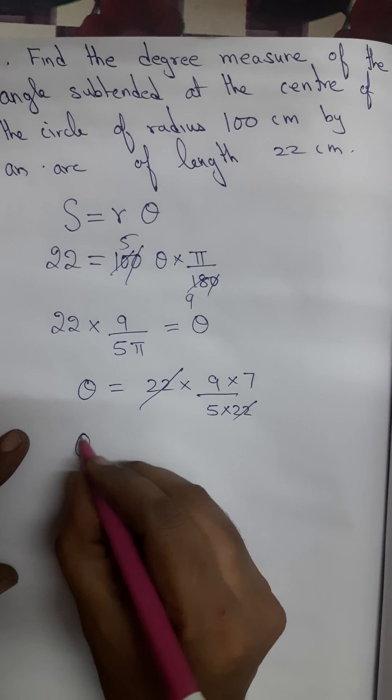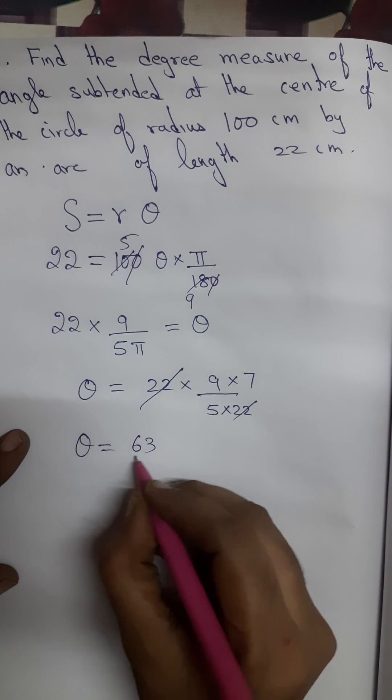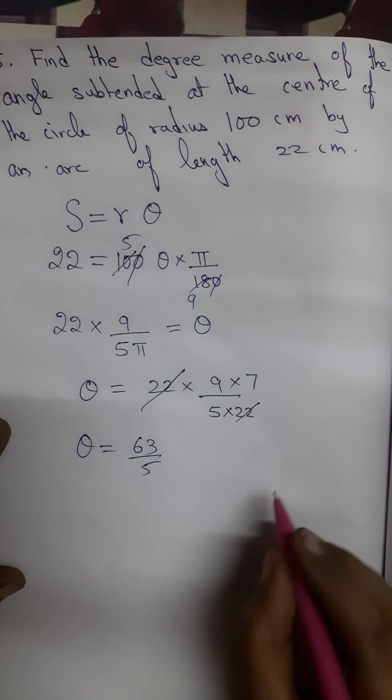22, 22 gets cancelled. Theta is equal to 63 by 5. Now, let me divide.